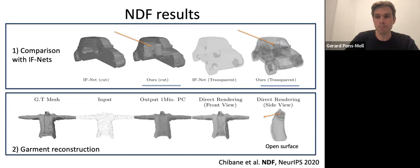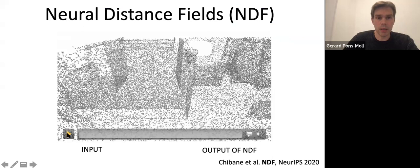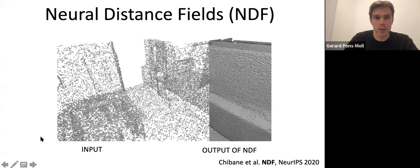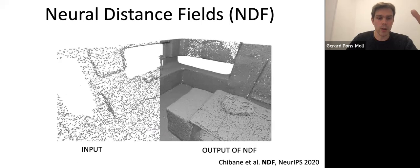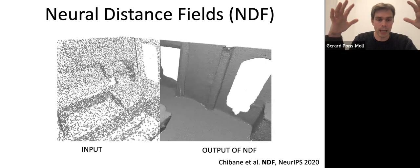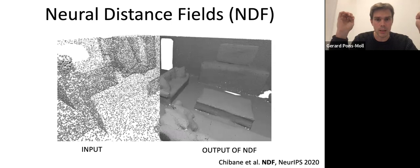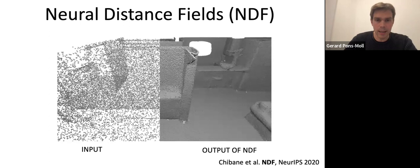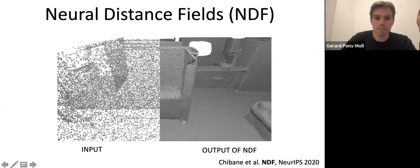We can also use it to reconstruct general 3D scenes, using what we call neural distance fields to reconstruct dense point clouds from sparse point clouds. The input is a sparse point cloud, and we use neural distance fields to reconstruct a dense point cloud from it. The thing works as follows: you pass the sparse point cloud through the neural distance fields, get the unsigned distance field, and then project the points to the surface using the formula I just showed. The cool thing is you can train directly with the scans — you don't need to watertight them or deal with all the things you had to do before.